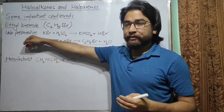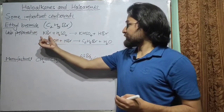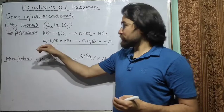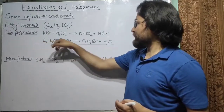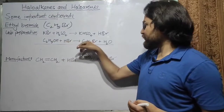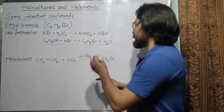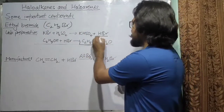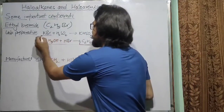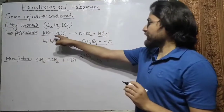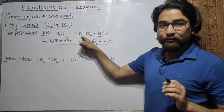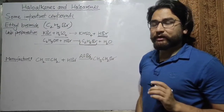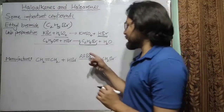Ethyl bromide can be prepared in the lab by the reaction of HBr with ethanol: C2H5OH combines with HBr to form C2H5Br (bromoethane) and H2O. HBr can itself be prepared by the reaction of potassium bromide with sulfuric acid, which gives potassium hydrogen sulfate (potassium bisulfate) and HBr.